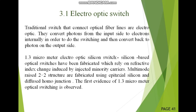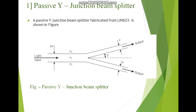Now we will study various types of Electro-Optic switches. First, I will discuss the passive Y-junction beam splitter. It is a type of coupler, but to design an Electro-Optic active switch, I will require this passive Y-junction beam splitter. So first I will discuss that, then we will continue with the Electro-Optic switch.